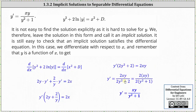Notice this fraction simplifies as there is a common factor of two. Simplifying the common factor of two between the numerator and denominator, we finally have y prime equals xy divided by the quantity y squared plus one, which is the given differential equation — verifying our general solution is correct. I hope you found this helpful.